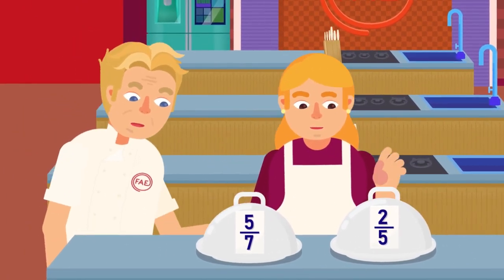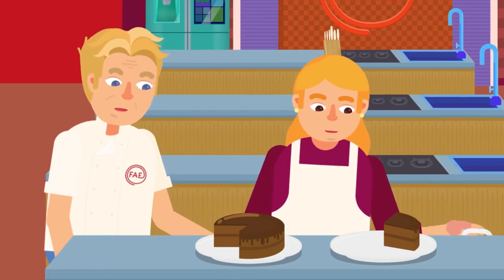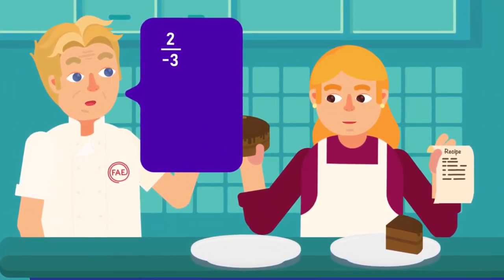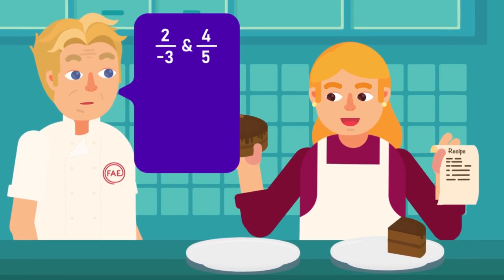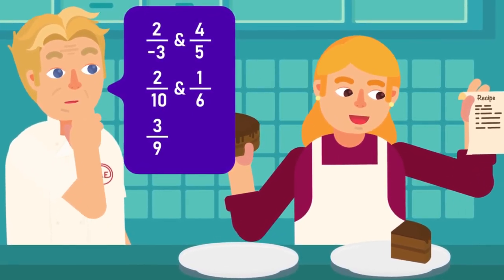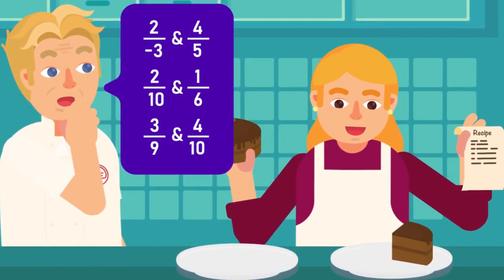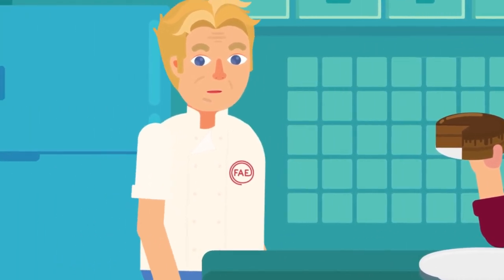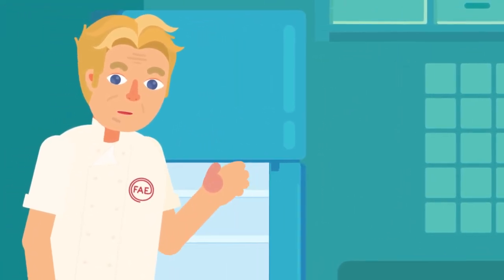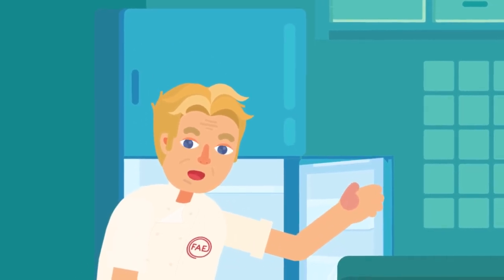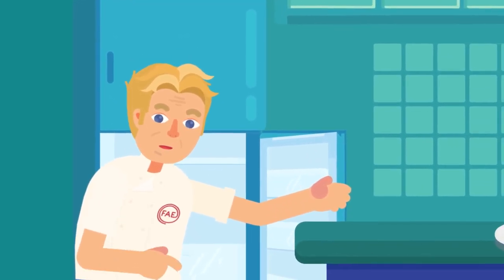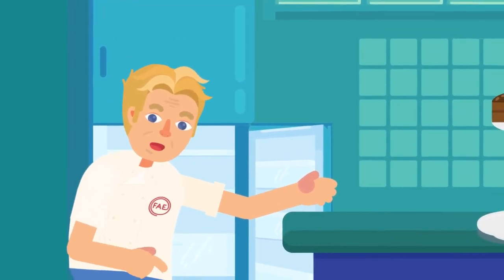Now the ball is in your court. Find out which of the following rational numbers is greater: 2 over minus 3 and 4 over 5; 2 over 10 and 1 over 6; 3 over 9 and 4 over 10. Apply the three steps one by one — doing these questions will enhance your grip on the concept and its application. Find the answers in the description of the video.